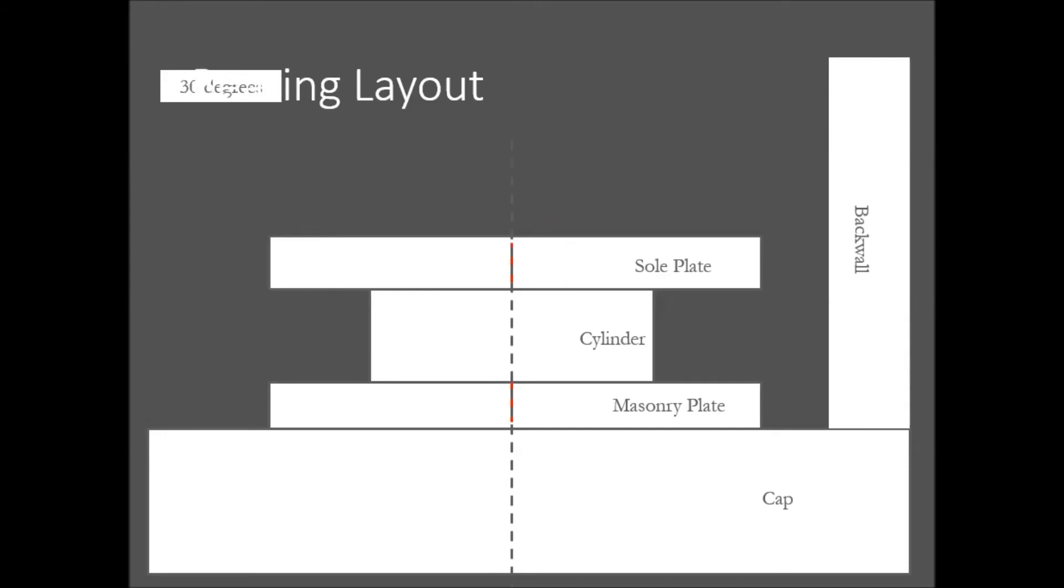Now we will look at an example for 30 degrees Fahrenheit. The end rotation is the same, negative 3/16 of an inch regardless of temperature. So we again slide the sole plate 3/16 of an inch in the negative direction. The temperature correction in this case is 3/8 of an inch negative. So we would slide the sole plate an additional 3/8 of an inch in the negative direction for a total adjustment of negative 9/16 of an inch.